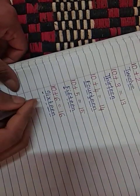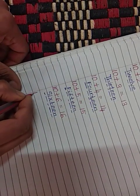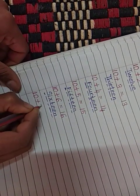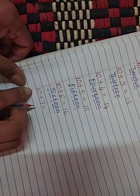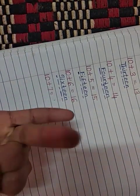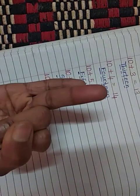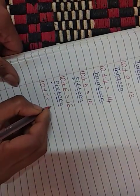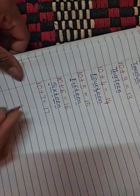Similarly, we will go for the next one. 10 plus 7. After 10 count till 7: 11, 12, 13, 14, 15, 16, 17. Answer is 17.